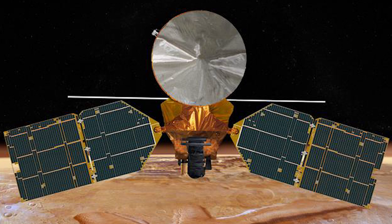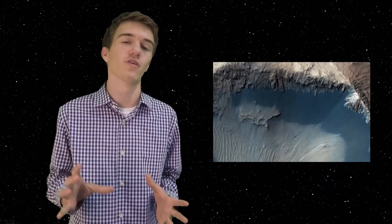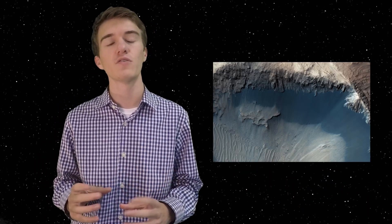So now that we've covered Odyssey and MRO and the different discoveries that they made, images that they took, and telecommunications protocol that they went through, in the next episode, we're going to talk about the next NASA mission, the next NASA orbiter, which is MAVEN, and why it's so important and what it's been able to discover over the last couple of years. Thank you for watching, and I hope to see you in the next one.